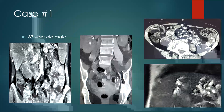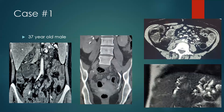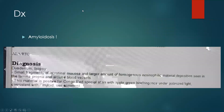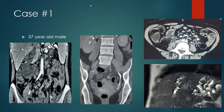We see a distal ureteric structure, and on the last image we see multifocal dilatation and strictures of the biliary system. Based on these images, I would like to take your polling for what is the most likely diagnosis.